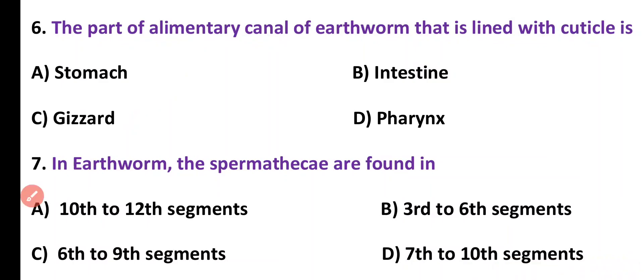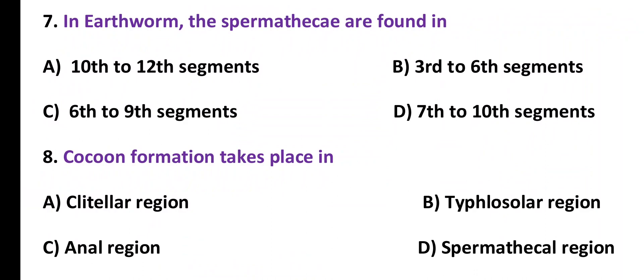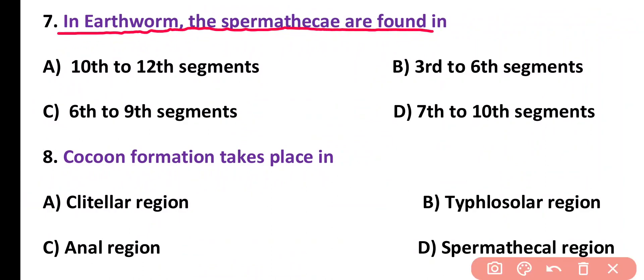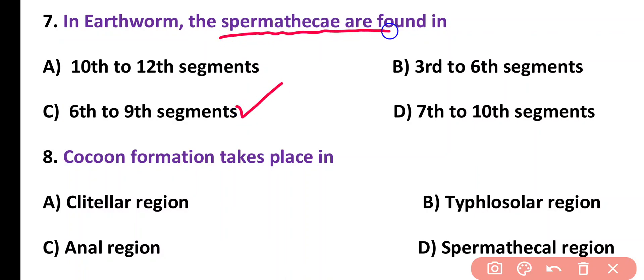Question number 7. In earthworm, spermatheca are found in: 10 to 12 segments, third to sixth segment, six to nine segments, or seven to ten segments. Correct answer is option C. Spermatheca are found in segments six to nine of the earthworm body.